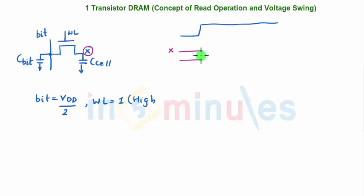These are the high and low levels of X, and our bit line is at VDD by 2. Let's quickly draw that as well - this is nothing but VDD by 2.